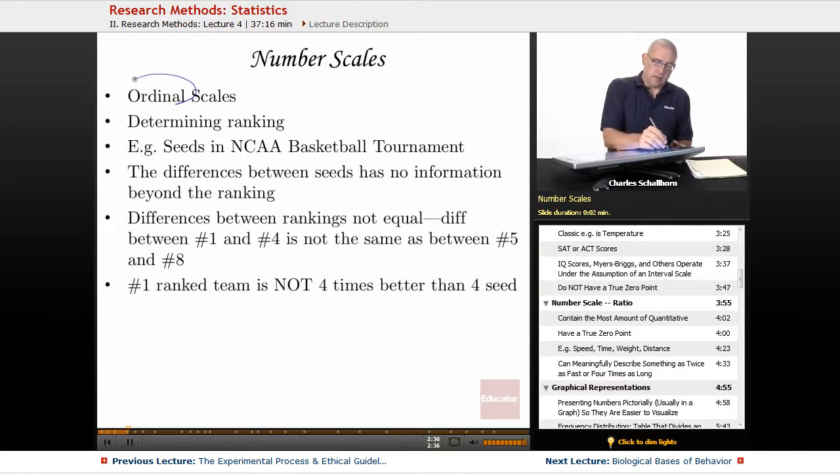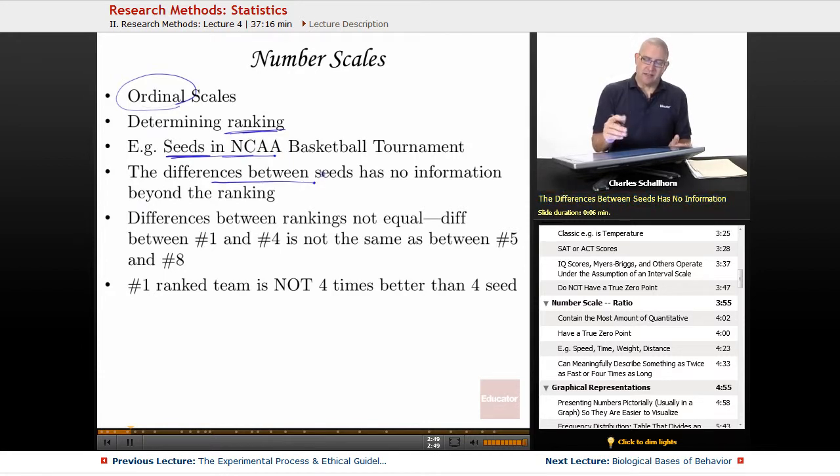Another number scale is ordinal. And this is going to be ranking. And if you're a basketball fan, or a football fan, but especially basketball, the prime example is going to be the seeds in the NCAA tournament. The differences, however, with the seeds is that the ranking is all you have because the rankings are not equal. The difference between number one rank and number four rank is not the same as between five and eight. There's no independent specific mathematical value. It's just a ranking. Ordinal equals ranking.